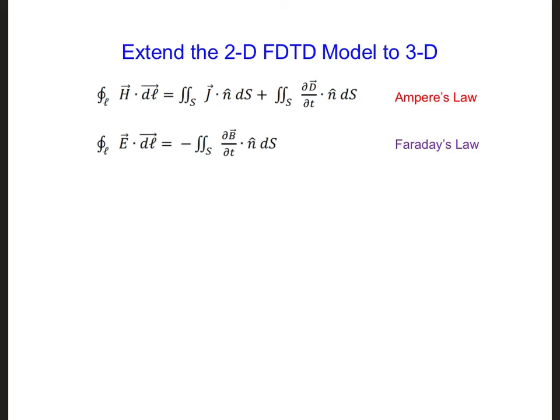There are different ways of visualizing a three-dimensional FDTD grid. Let's start by drawing in the plane of the screen the three components that we already have from the last design challenge: HY, EZ, and EX.